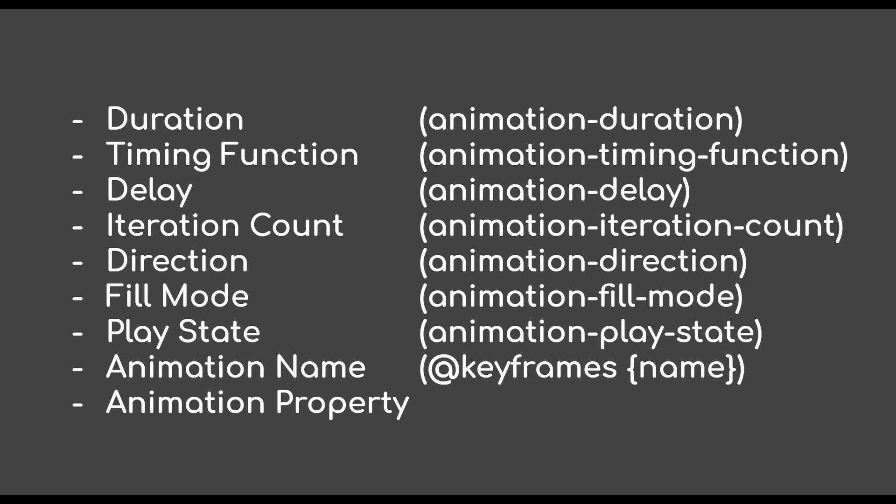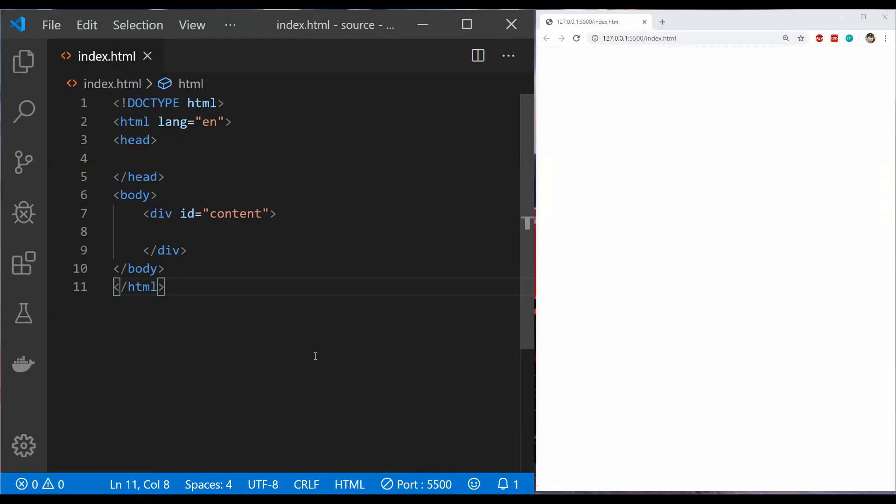The animation-name property is an important one. We create an @keyframes rule and give it a name, and that name is used for the animation-name property. The @keyframes rule defines the animations that can be applied to an element — we specify the start at 0% and the end at 100%, with optional intermediate states. Some older browsers as late as 2017 still need the webkit prefix for animation properties, but for this video I will only use standard animation property names.